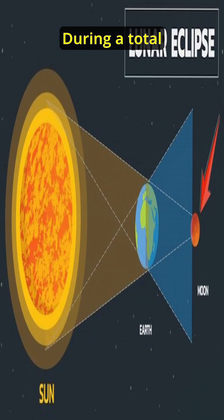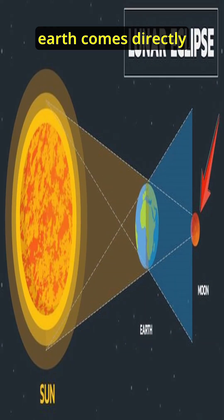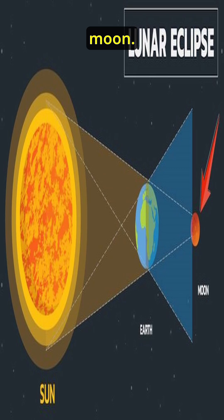During a total lunar eclipse, the earth comes directly in between the sun and the moon. Now you'd think that the earth's shadow would make the moon completely dark, right? But instead the moon glows red.